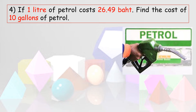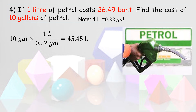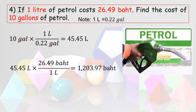If 1 liter of petrol costs 26.49 baht, find the cost of 10 gallons of petrol. First, convert gallons to liters: 10 gallons times 1 liter over 0.22 gallons. Cancel gallons, then divide 10 by 0.22, which equals 45.45 liters. Now multiply by the cost: 45.45 liters times 26.49 baht per liter. Cancel liters, giving a total cost of 1,203.97 baht.